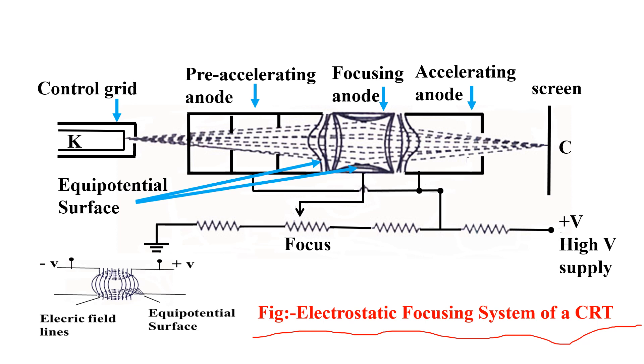The electrostatic focusing system is also known as the electron lens system, and this system is used in all CROs. It consists of a pre-accelerating anode, focusing anode, and accelerating anode.